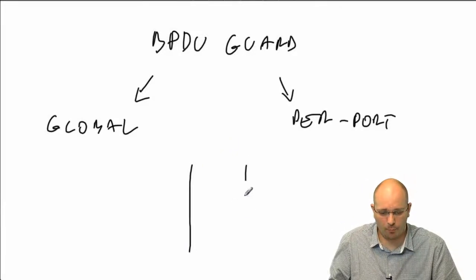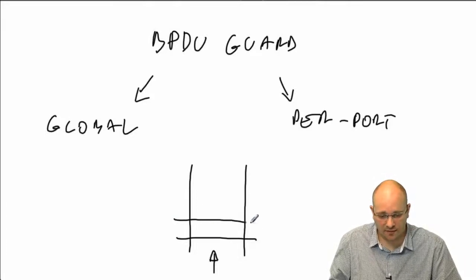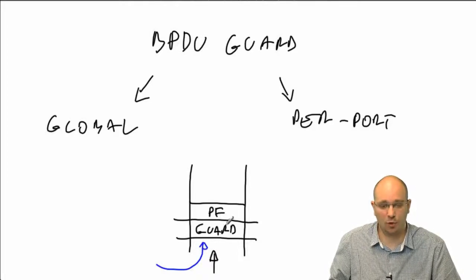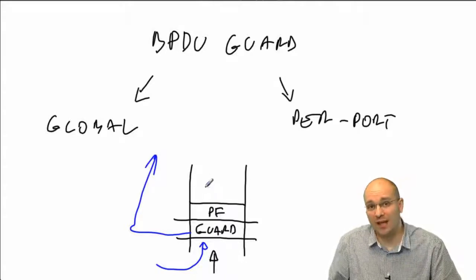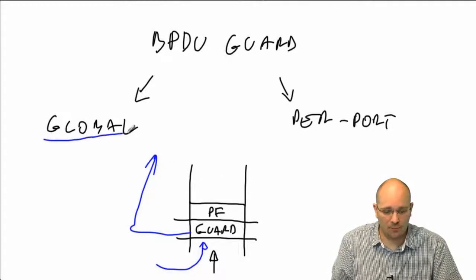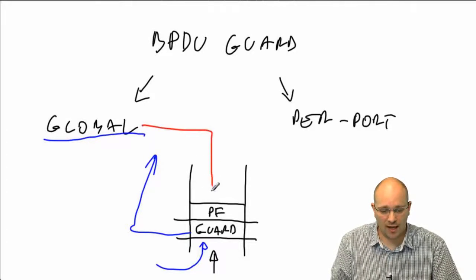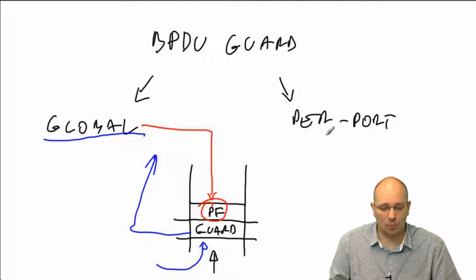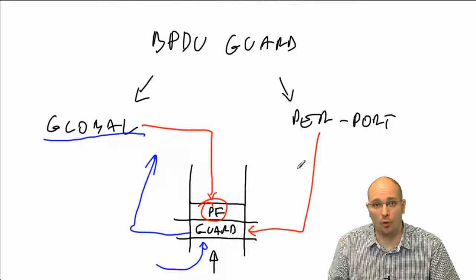Let's imagine that we have a port and we have traffic arriving to this port. The first feature that the incoming BPDU is going to encounter will be the guard, and behind the guard we have the Portfast sitting, if it was configured. That means that when the BPDU arrives on this port, it will trip off the guard, which will error disable the port, effectively turning the Portfast off as well. When the BPDU guard is configured globally, it will be configured as part of the Portfast command. That means that if the guard is enabled globally, unless Portfast is enabled on this port, the guard will not be enabled. But when configured per port, the guard is an unconditional feature and will always be active.